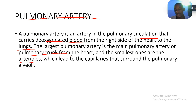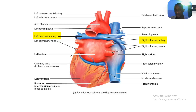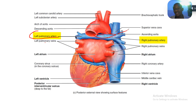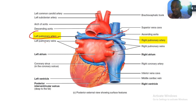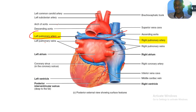Unlike the pulmonary veins which are just four, the pulmonary arteries are many — the trunk divides into many branches. Divisions of arteries are called branches, while divisions of veins are called tributaries. I'll talk about this more when doing the video on veins. So that's the difference between the pulmonary artery and pulmonary vein.